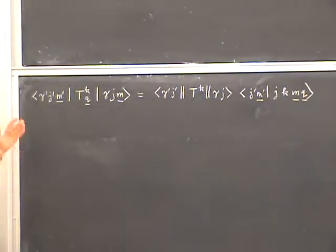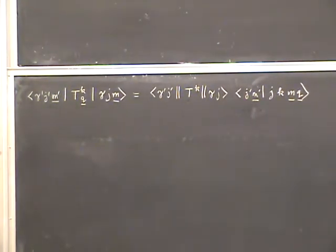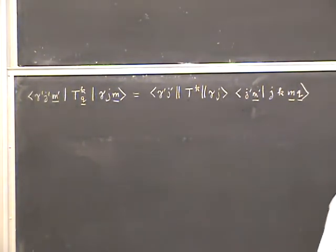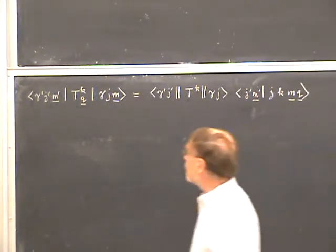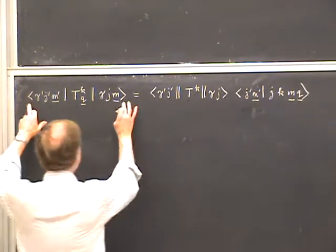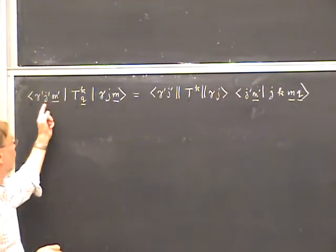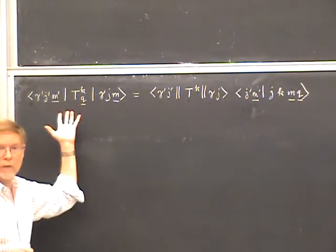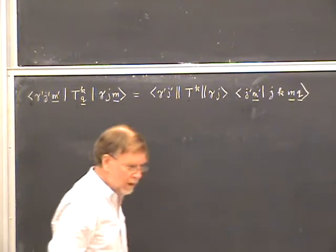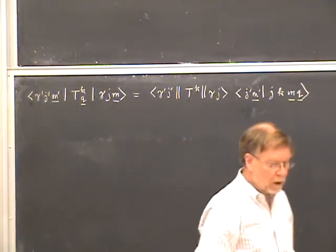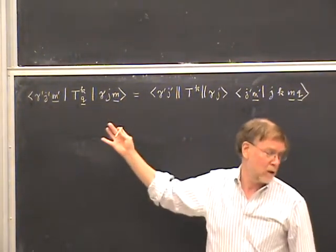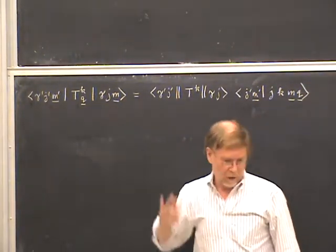Last time I explained the two main applications of the Wigner-Eckhart theorem: one is for selection rules, and the other is to actually calculate many matrix elements when the magnetic quantum numbers are variables. As far as selection rules are concerned, it's actually very easy to use the Wigner-Eckhart theorem.